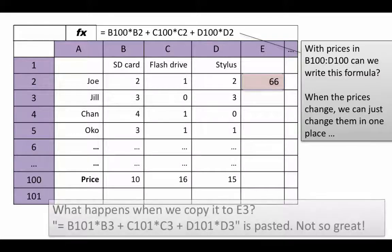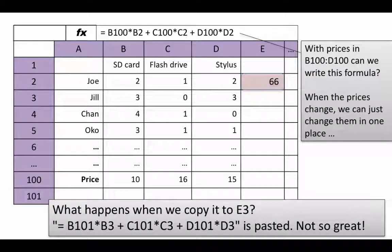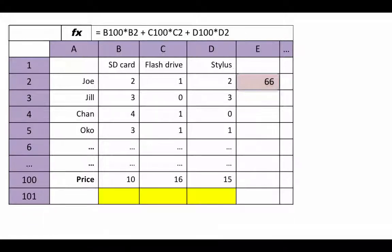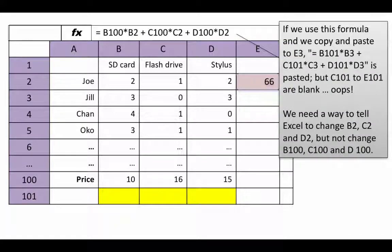To recap: when we copy to E3, what gets pasted is B101 times B3, C101 times C3, and so on. This is not correct. We need a way to tell Excel to selectively change the addresses — leave B100, C100, D100 alone, and change only B2, C2, and D2.